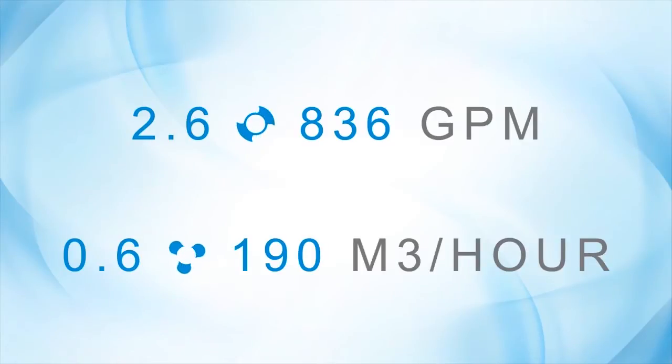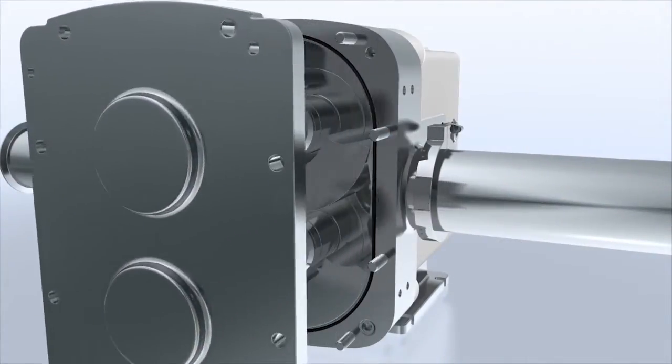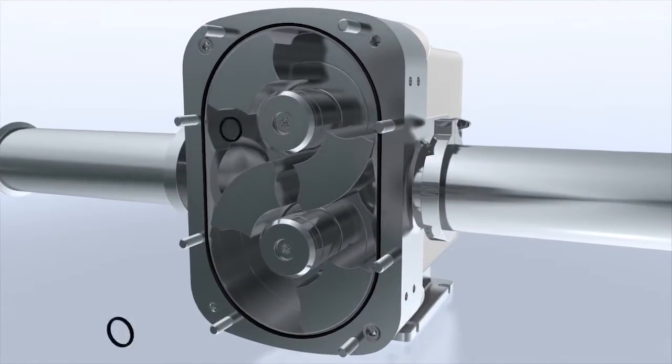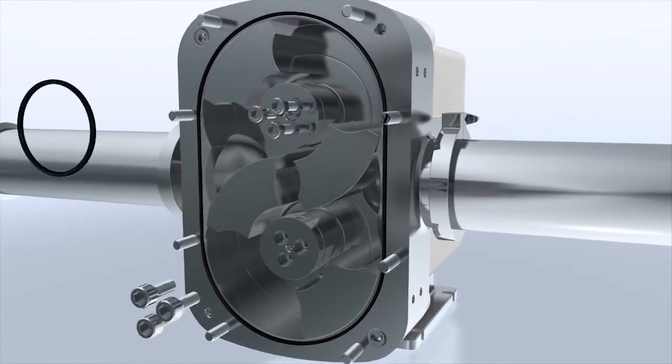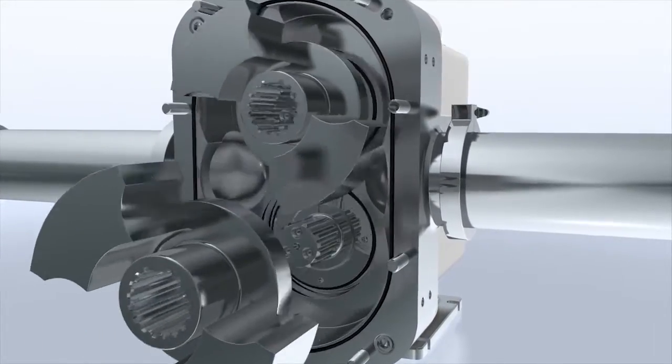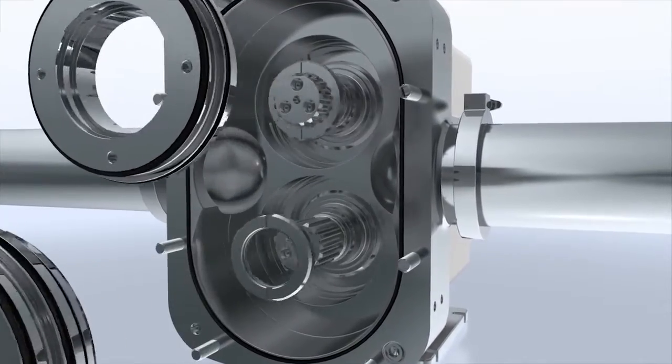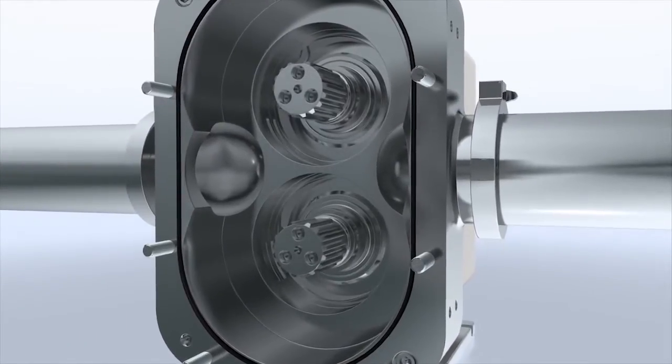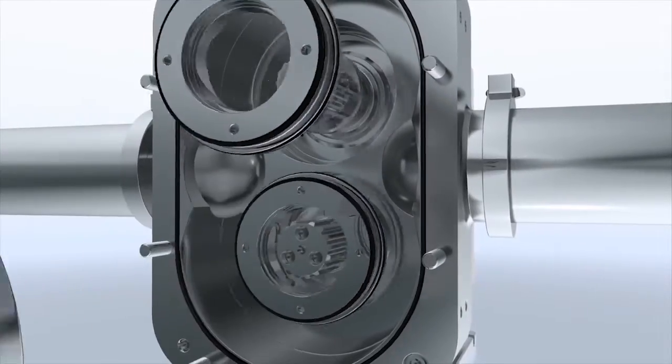For ease of maintenance and reduced pump downtime, the front loading seal design enables seal inspection and maintenance without disconnecting the pump from your process line. External shimming of the rotor's back and front face clearances can also be performed while the pump is in line, reducing further downtime.